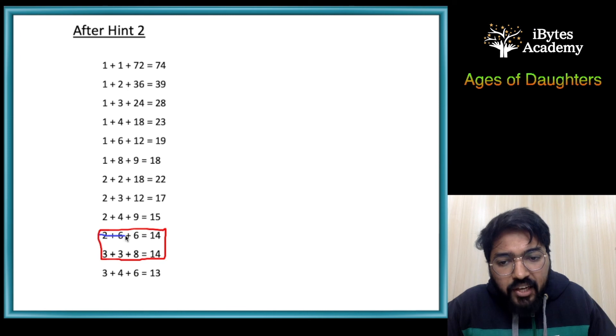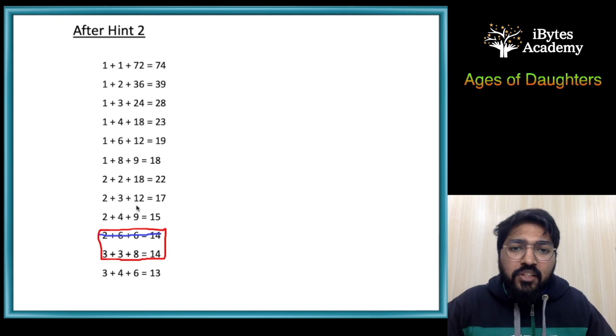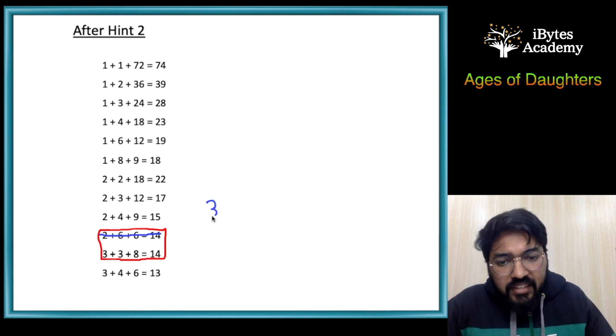So our answer definitely cannot be 2, 6, 6 because in this case we have two oldest daughters with the age of 6. Therefore, 3, 3, 8 is our final answer.